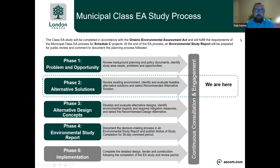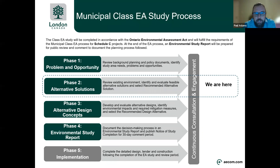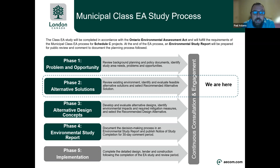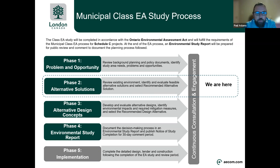The municipal class EA process is in accordance with the Ontario Environmental Assessment Act. Because this project has potential for larger environmental issues, it's classed as a Schedule C project, which is required to follow all phases of the environmental assessment process. The first phase is the problem and opportunity statement — this is where we review background information, look at what the issues are, and come up with a statement that helps lead the project forward. We're now in phase two, which is the alternative planning solutions, where we review existing conditions, identify feasible alternative solutions, evaluate them against a set of criteria, and come up with a recommended alternative solution to move forward into phase three.